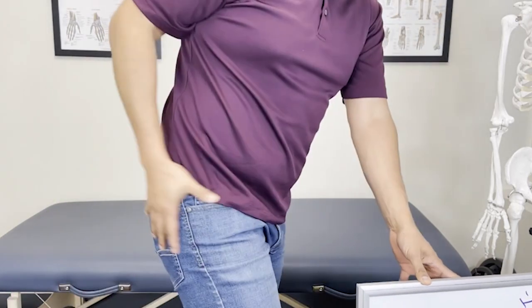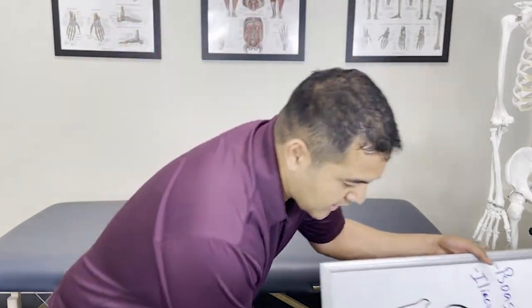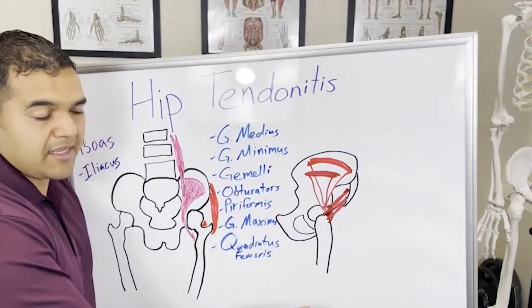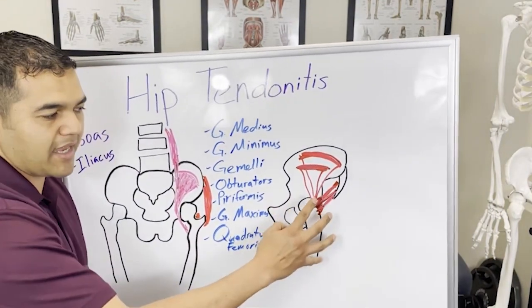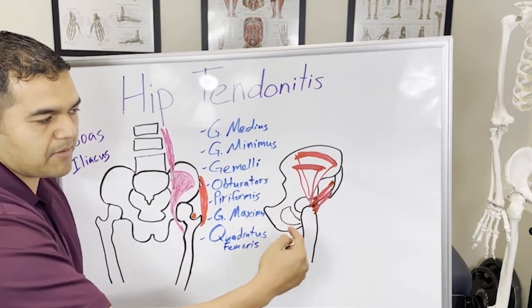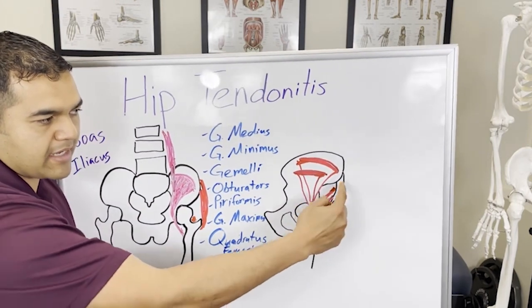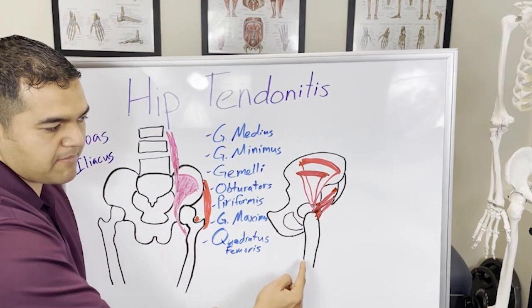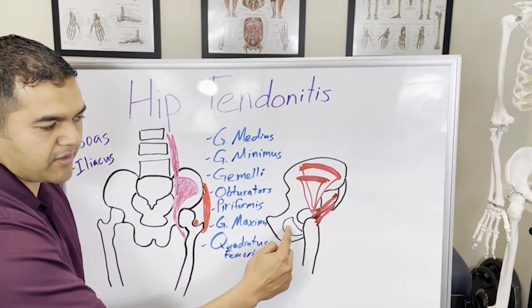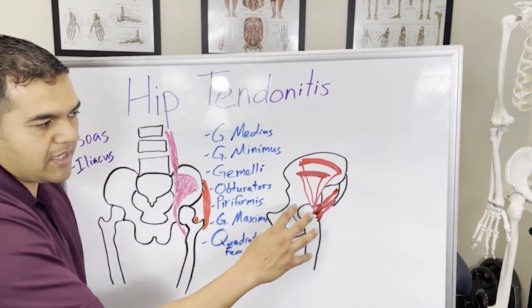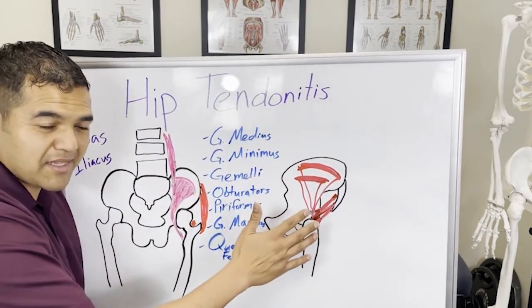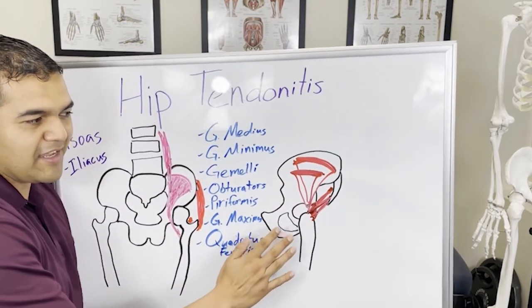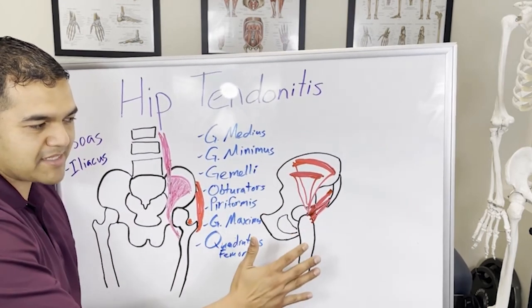The more common hip tendonitis is on the outside of the hip, and that's what's shown on this other picture. This picture is showing you the outside — this would be the left hip. Here's the front, the back, the tailbone, the thigh bone, and a little hole that's part of the hip bone. I've drawn some of the muscles here. There are tons of muscles — I've labeled them all right here.